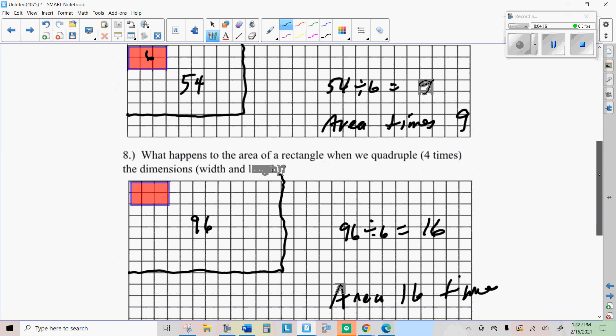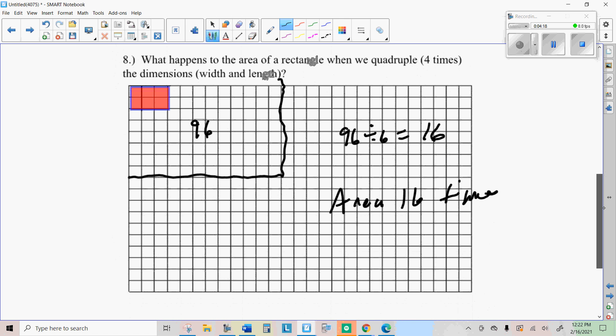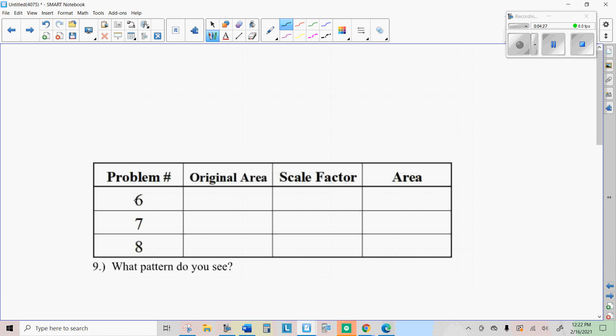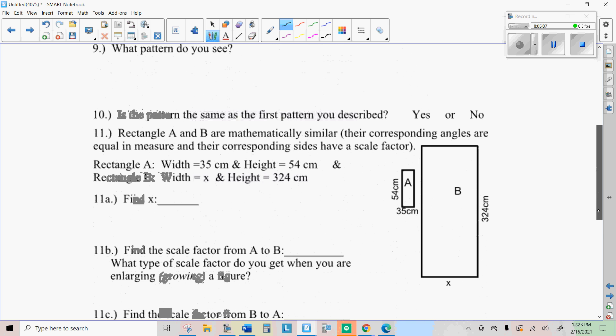If you triple the dimensions, the width and length, the area becomes nine times greater. If you quadruple the dimensions, width and length, the area becomes 16 times larger. So on problem number six, the original area was six. The scale factor was two and the area was 24, which is four times greater. On problem number seven, the original area was six. The scale factor was three. The area was 54, which is nine times greater. And scale factor four, we had an area of 96, which is 16 times greater. So we see that same pattern.